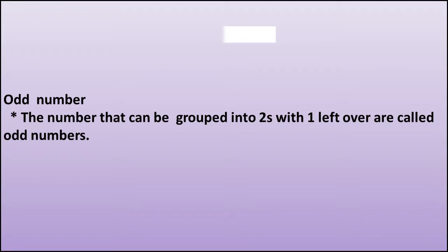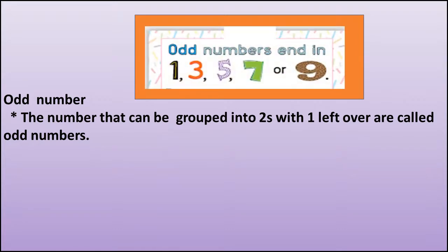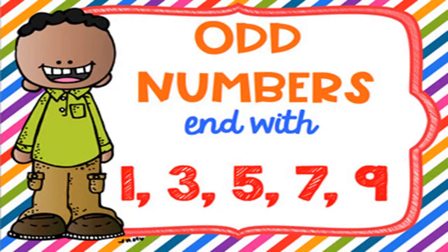Dear students, you have to remember that odd numbers are those numbers that can be grouped into twos with one left over. Odd numbers always end at one, three, five, seven, or nine. So you have to keep in your mind that odd numbers always end with one, three, five, seven, nine.